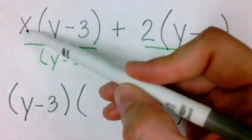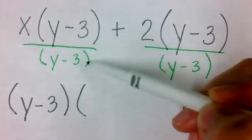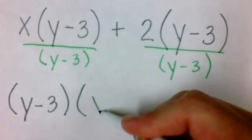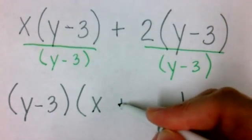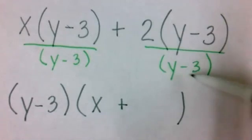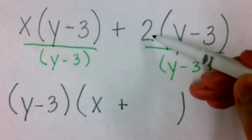So we have the (y-3) canceling each other out here, leaving us with just the x. That'll go first in our second parenthesis. Now we have the (y-3) canceling each other out here, leaving us with just the 2.